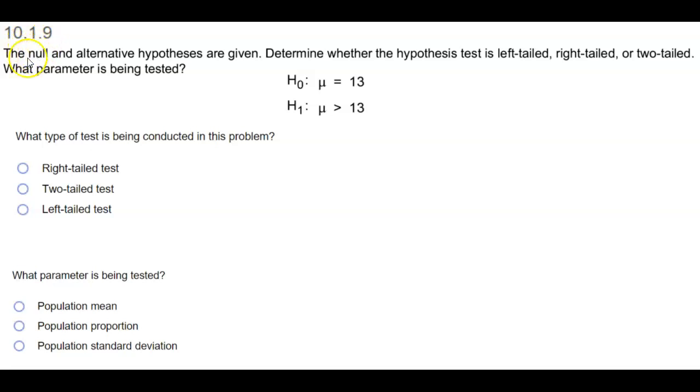Section 10.1.9. The null and the alternative hypothesis are given. Determine whether the hypothesis test is left-tailed, right-tailed, or two-tailed, and what parameter is being tested.